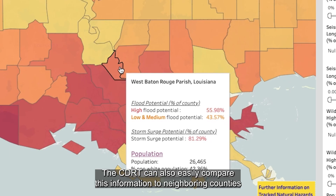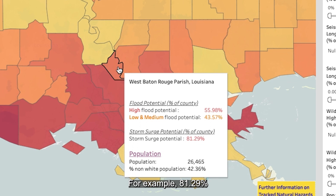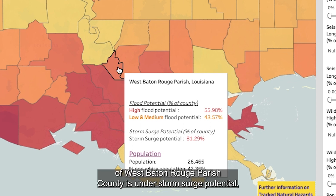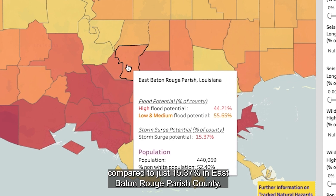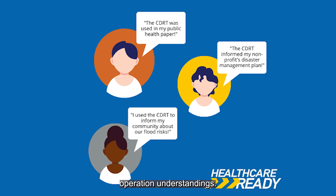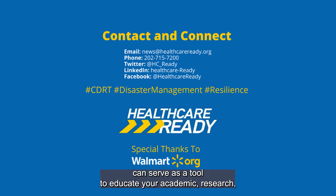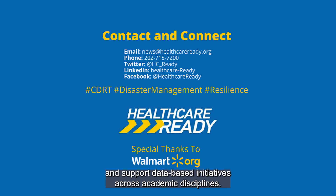The CDRT can also easily compare this information to neighboring counties for a more holistic understanding of vulnerabilities. For example, 81.29% of West Baton Rouge Parish County is under storm surge potential, compared to just 15.37% in East Baton Rouge Parish County. This resource incorporates a variety of other data analysis capabilities that can guide research in addition to general disaster operation understandings. The CDRT can serve as a tool to educate your academic, research, and greater community about the challenges facing unique populations and support data-based initiatives across academic disciplines.